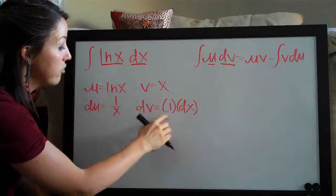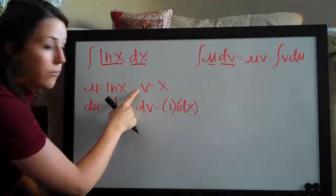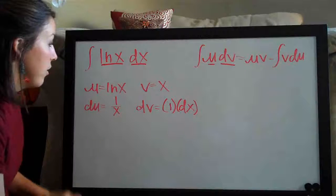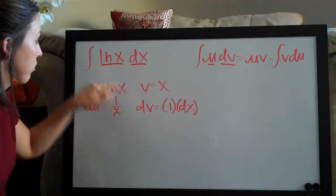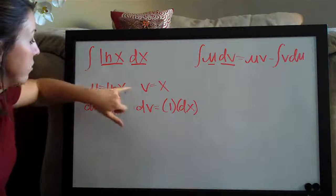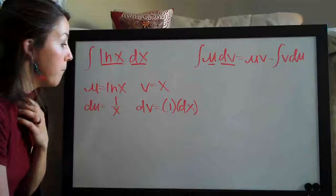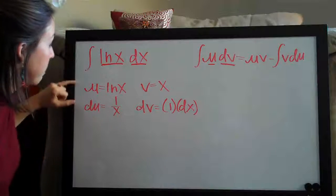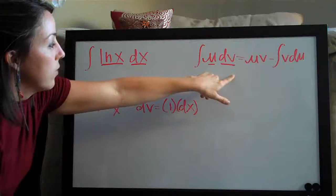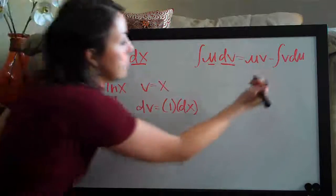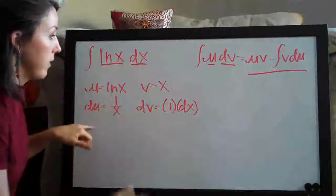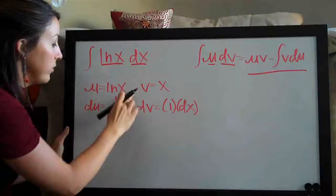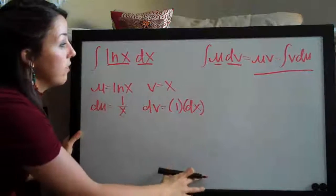So we take the integral of this to get v, which is x here. So now that we have these four components, u and dv which were from our problem, and du and v which we solved for, we can plug these four components into our formula over here. So this part is what we're going to plug the components into and hopefully we'll end up with something that's simpler that we can actually integrate.